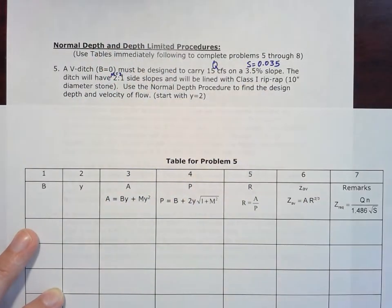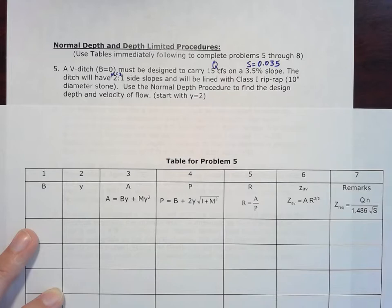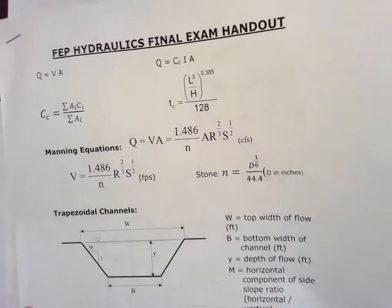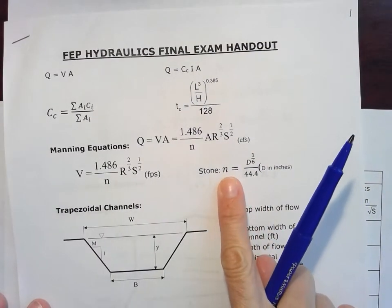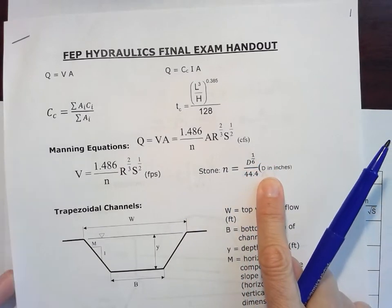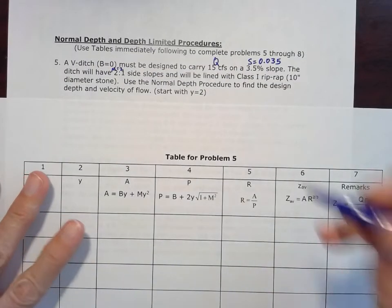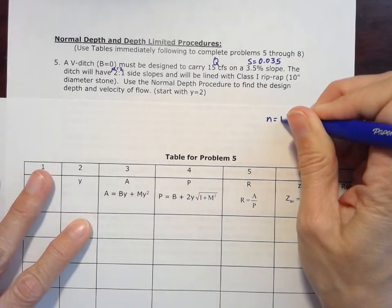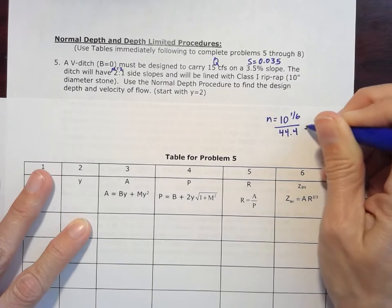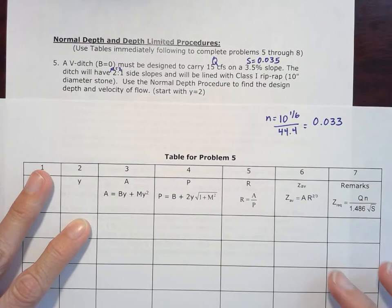It's going to be lined with class 1 riprap, which means 10-inch diameter stone. So from that stone, we can tell what our Manning's N is going to be. We've got that equation also on this handout sheet here. For stone, our Manning's N is going to be the diameter to the 1/6 divided by 44.4, where we have our diameter in inches. So my N is going to equal 10 to the 1/6 divided by 44.4. So my Manning's N to 3 decimal places is 0.033 for that 10-inch diameter stone.